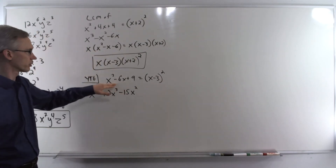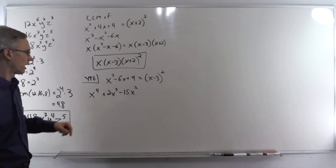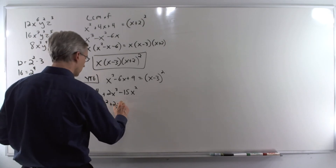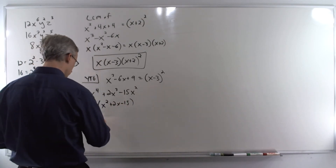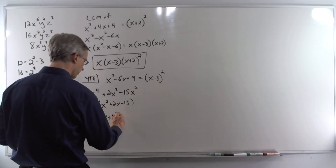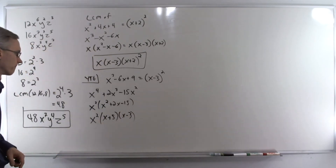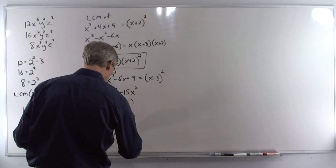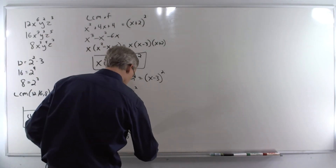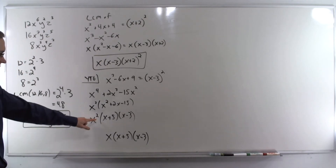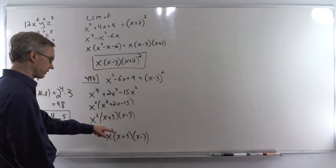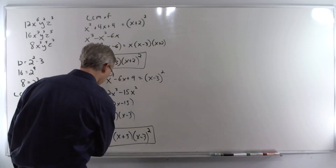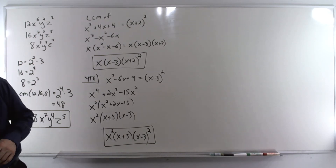Your turn, number 6. Another perfect square trinomial factors into (x - 3)². And here we can factor out an x², giving us x²(x² + 2x - 15). Then this trinomial factors — two numbers that multiply to get negative 15 and add to get 2 — so that's x²(x + 5)(x - 3). Now list each base individually: x, (x + 5), and (x - 3). Select the largest exponent for each: for x we've got 2, for (x + 5) that's 1, and for (x - 3) the larger exponent is 2. Therefore our LCM is x²(x + 5)(x - 3)².